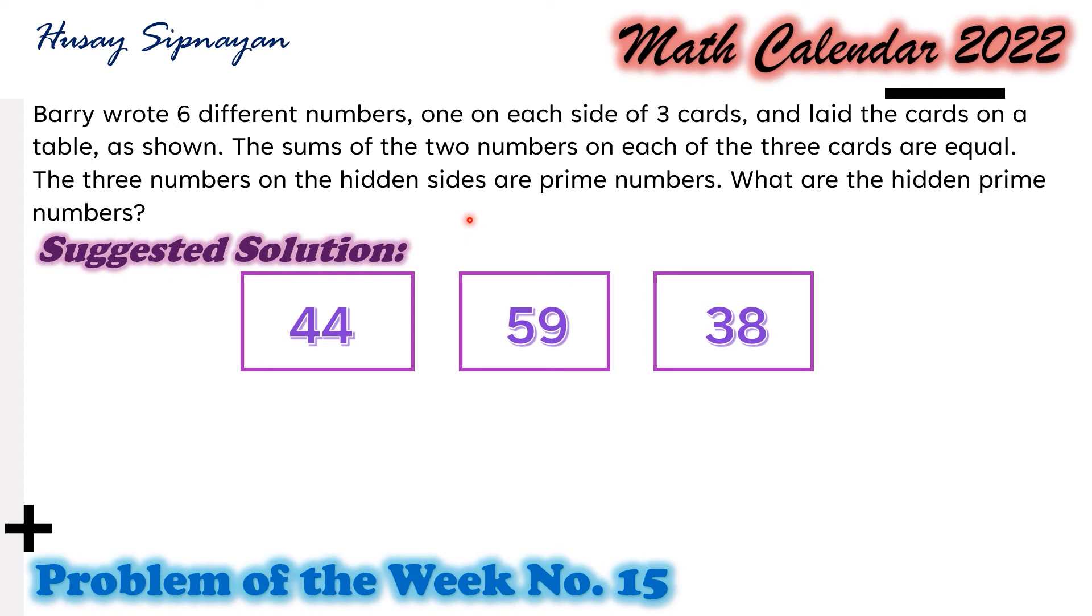Therefore, the middle card's hidden number must be 2. So, the constant sum is 59 plus 2 and that is 61.